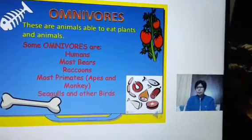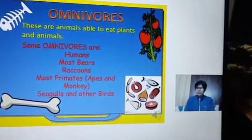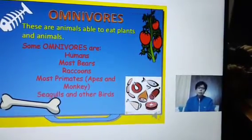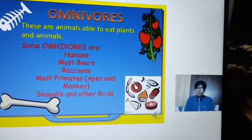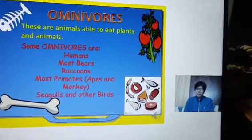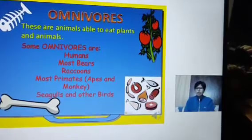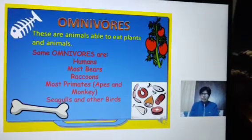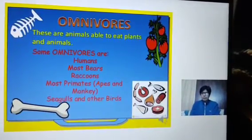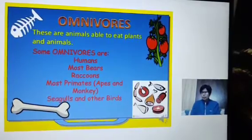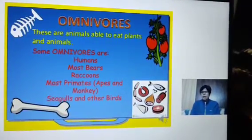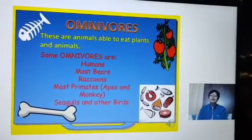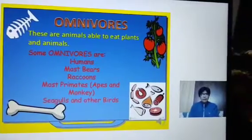Omnivores mean those animals which are able to eat plants as well as animals or meat. Examples include humans — hum log bhi do tarah ke hote hain. Some are vegetarian who eat only plants and no meat or eggs. Non-vegetarians eat vegetables as well as meat. So humans are also an example of omnivores. Then bears, raccoons, apes, monkeys, seagulls, and many birds are also omnivores, able to eat both plants and animals.